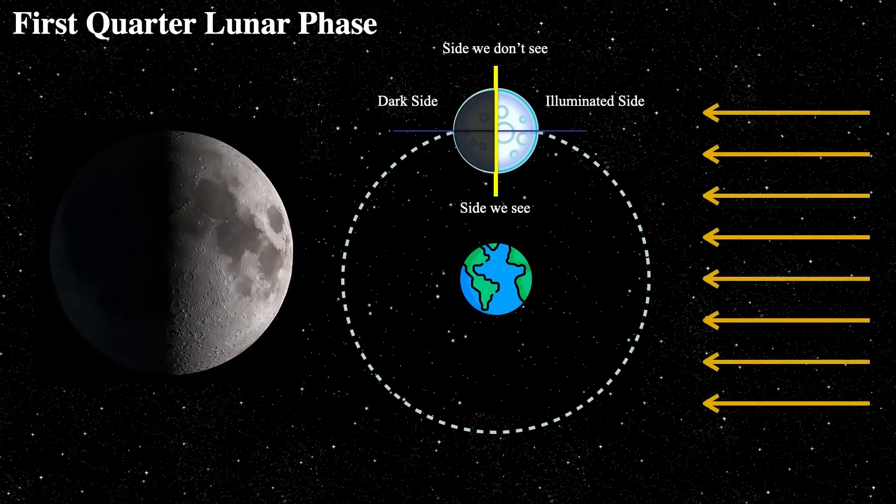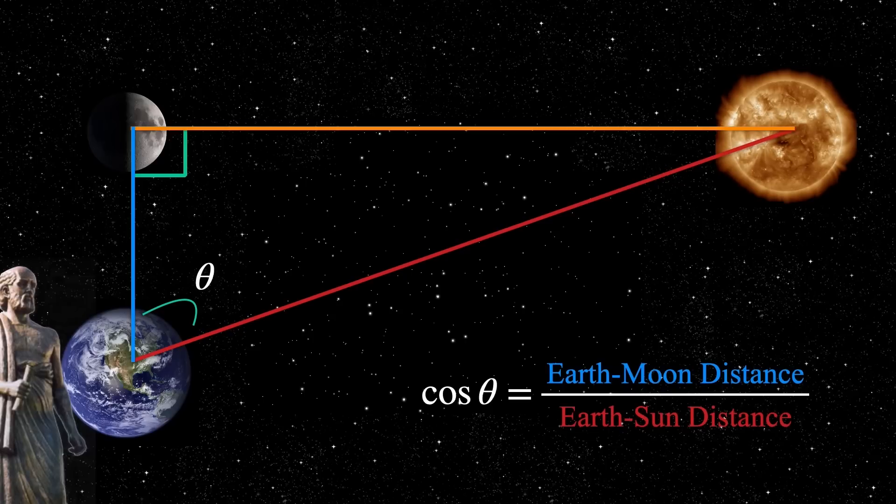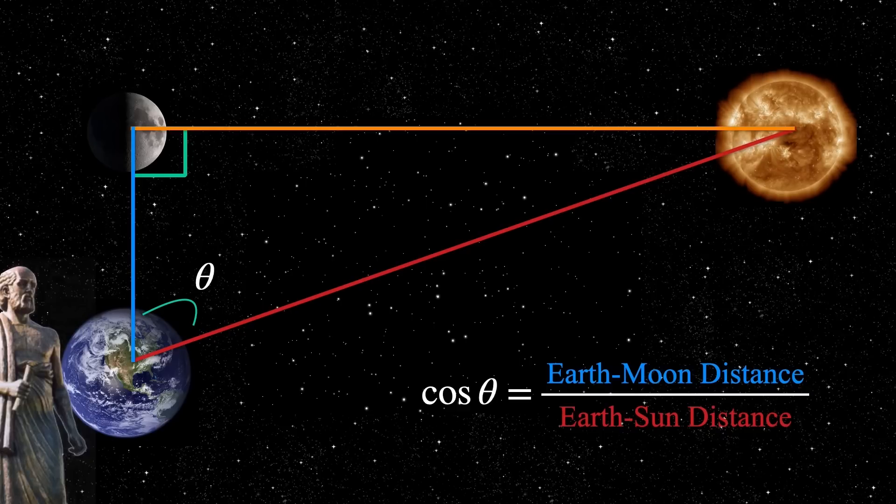When the moon is at first quarter phase, we know that the geometry in space, if you look down from above, we see that the moon is in one part of a triangle between the moon, the earth and the sun.